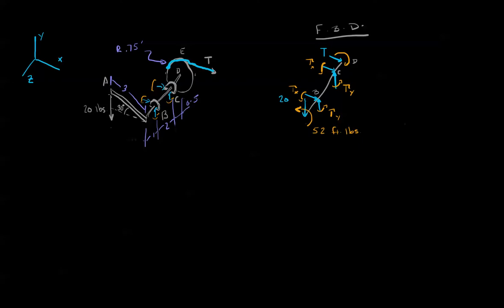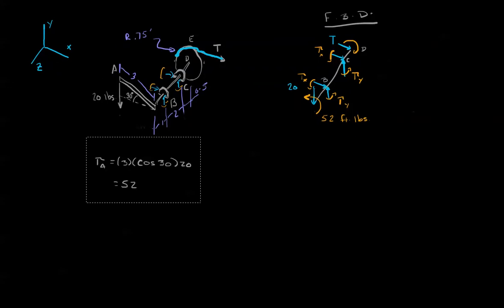Well I know that I have 20 pounds going down this way. So I made 20 pounds going down right here. But in addition that 20 pounds generated a torque. That torque was 52 foot pounds. Let's write down how I got that. There we go.